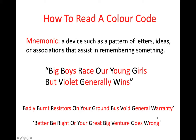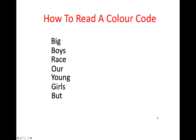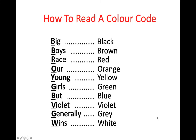So, how would you use this mnemonic? You write out the phrase: 'Big boys race our young girls, but Violet generally wins.' Then you look at the first letter of each of those words and assign the relevant colour to it. So the first B will be black, then we have brown, red, orange, yellow, green, blue, violet, grey, and white.